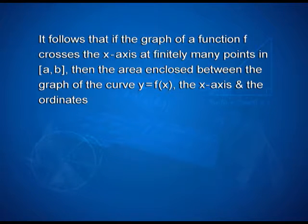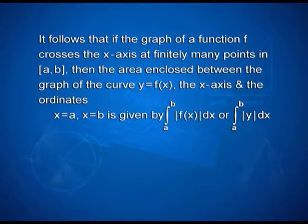Here we can clearly see that the area enclosed between y = x, the x-axis, and the ordinates x = −1 and x = 1 is not 0. So it follows that if the graph of a function f crosses the x-axis at finitely many points in the interval [a, b], then the area enclosed between the graph of y = f(x), the x-axis, and the ordinates x = a and x = b is given by ∫(a to b) |f(x)| dx, or ∫(a to b) |y| dx.